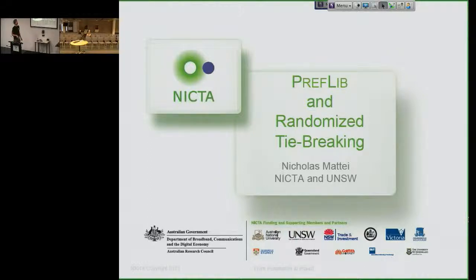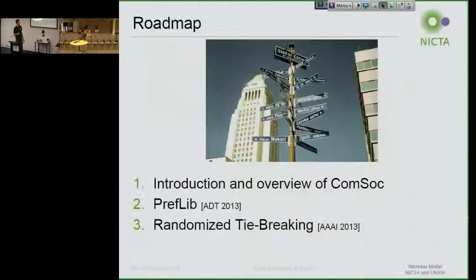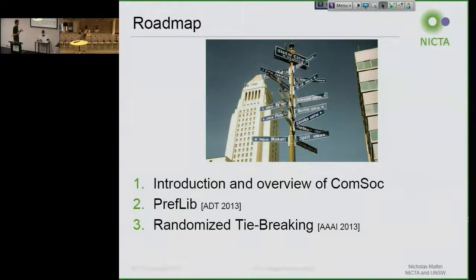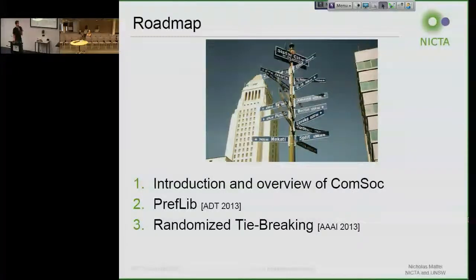This is a combination of two talks I gave while I was in the U.S. for a little while, and it's mostly going to be centered around our work with PrefLib, which is our whole idea of aggregating a lot of data for researching preferences, and that will be presented at Algorithmic Decision Theory here in about a month. I'll also talk about our paper on randomized tiebreaking, which appeared at AAAI earlier this year.